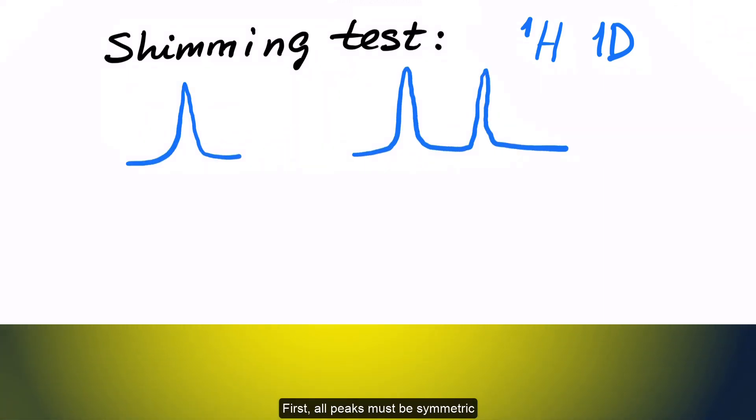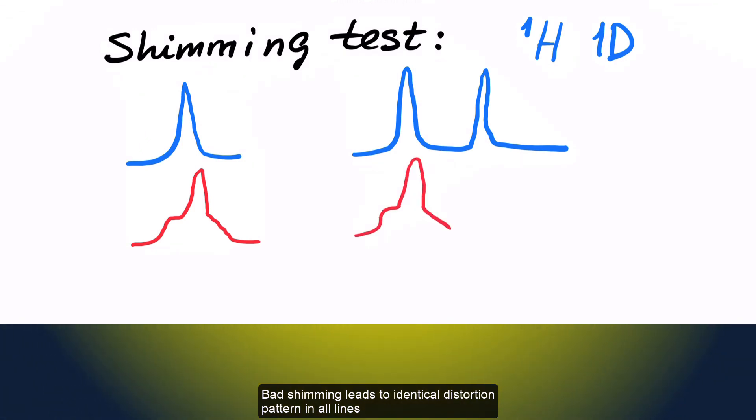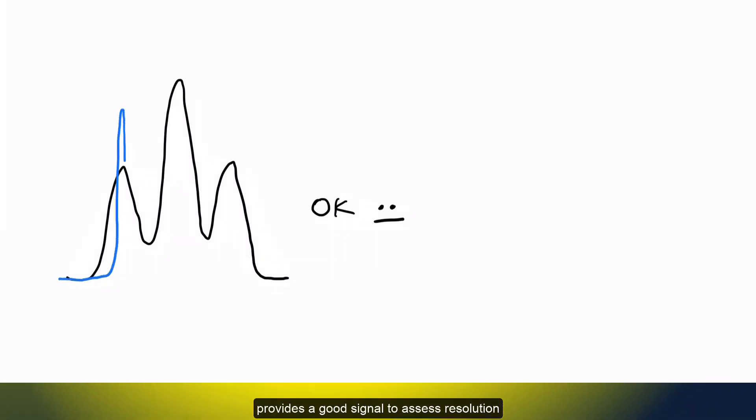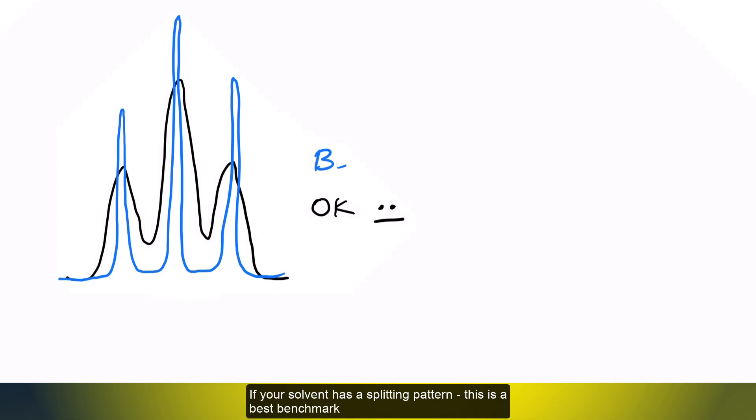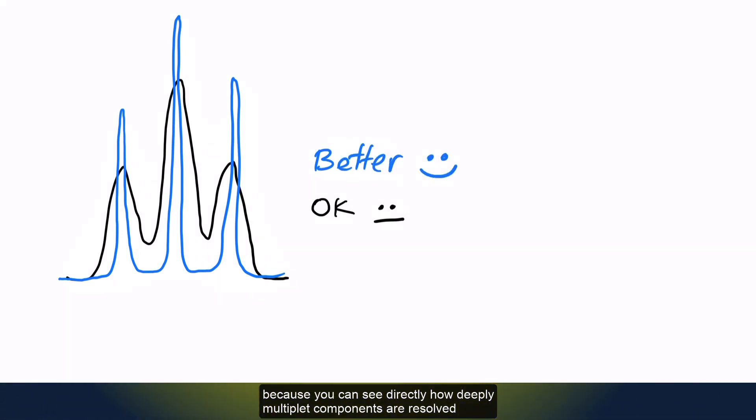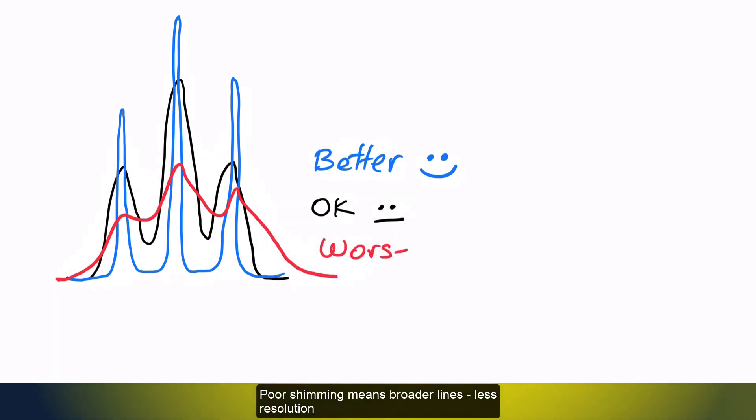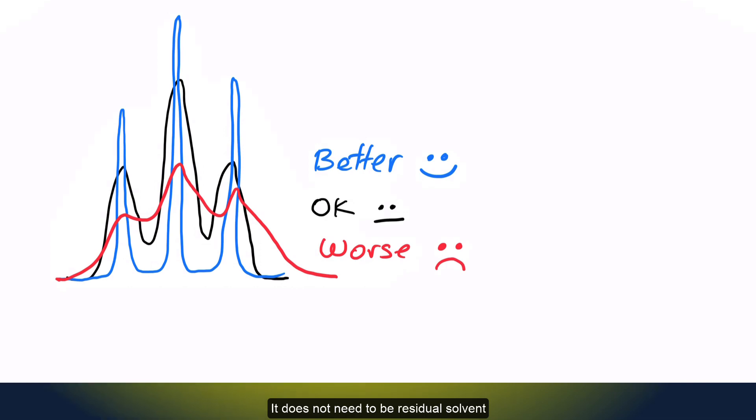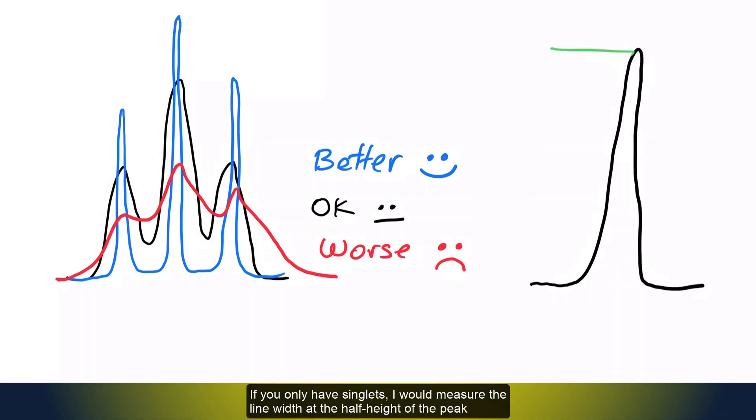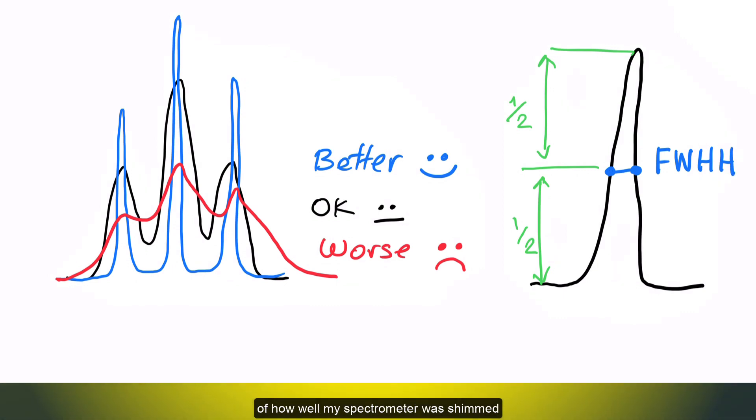First, all peaks must be symmetric. Bad shimming leads to identical distortion pattern in all lines. Often a residual peak of a protonated solvent in the deuterated solvent provides a good signal to assess resolution. If your solvent has a splitting pattern this is the best benchmark because you can see directly how deeply multiplied components are resolved. Poor shimming means broader lines, less resolution. It doesn't need to be residual solvent. Any strong peak of your compound with J coupling may serve this purpose. If you only have singlets, I would measure a line width at the half height of the peak and record this number in my notebook. The full width at half height of this peak becomes my internal measure of how well my spectrometer was shimmed before I started a particular NMR experiment.